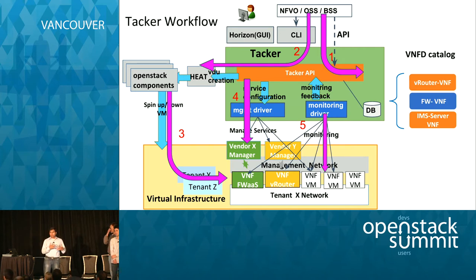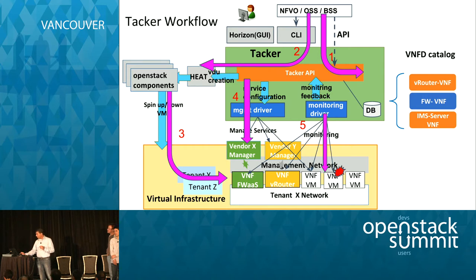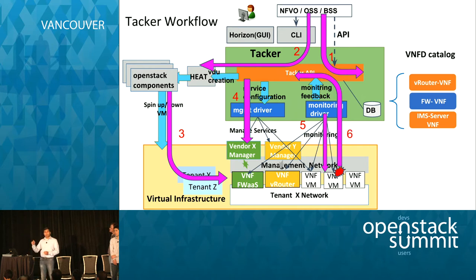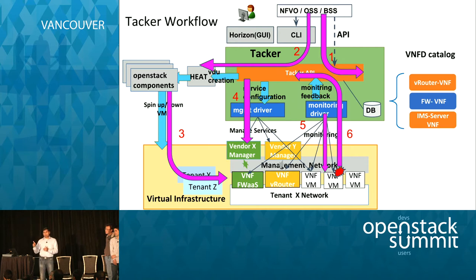The old NFV trend is you're virtualizing a network function that was running in hardware with five-nines availability. When you virtualize, you need to bring that same high availability and reliability to the NFV solution. Tacker provides a way to monitor VNFs, and if a VNF has an issue — maybe it went down — it can automatically respawn. The overall flow starts from building your catalog of VNFs, standing them up using Tacker APIs, and then Tacker babysitting your VNF to keep it performant, alive, and providing the service you asked for.